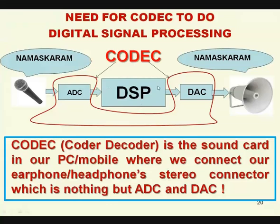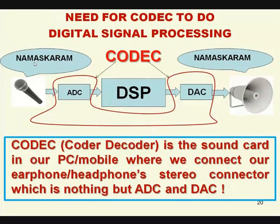We connect our stereo connectors — microphone and loudspeaker — to our PC or mobile only through the sound card, which is a CODEC: ADC and DAC. There is a microphone, then ADC because infinite values cannot be processed by the DSP. The ADC does sampling, quantizing, and encoding. When we sample the signal, infinite values become finite values — that is the model. The finite values of x(n) can be processed comfortably to get y(n), which is then converted to y(t) for the loudspeaker. Without ADC and DAC, DSP is impossible.